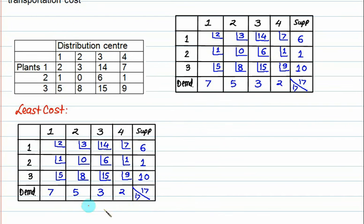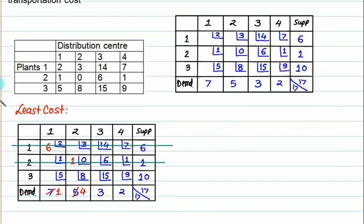Using the penalty method, we select the minimum cost which is 0; the maximum we can allocate equals 1. Plant 2 capacity is exhausted. From remaining cells, minimum cost is 2; we can allocate 6 units, so plant 1 capacity is exhausted. The next minimum cost is 5; we allocate 1 unit, leaving 9. Column 1 is now completely exhausted.